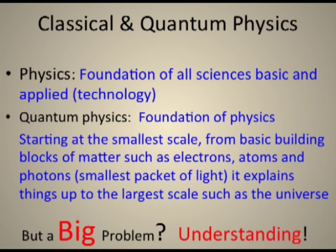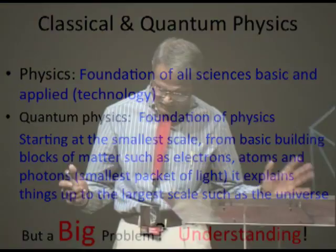So, what is classical and quantum physics? Physics is the foundation of all sciences, basic and applied, which includes engineering. Classical physics is the physics which deals with large-scale objects, like what we see in our daily life. We can predict lunar eclipses very accurately, and everything works at large scale using classical physics.